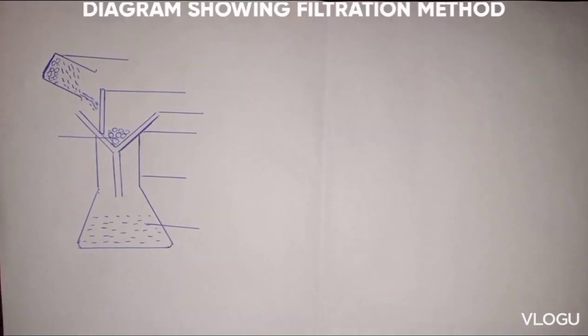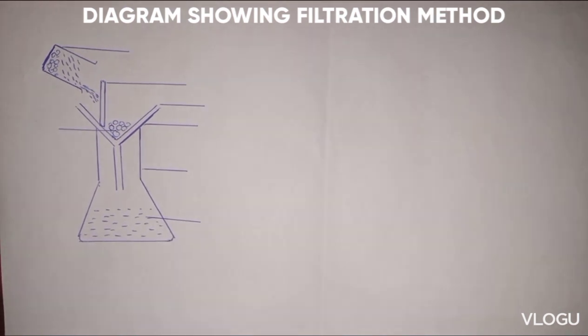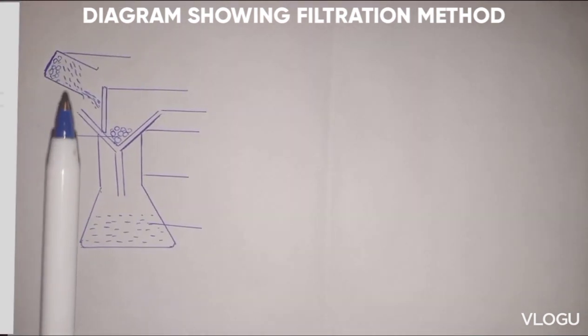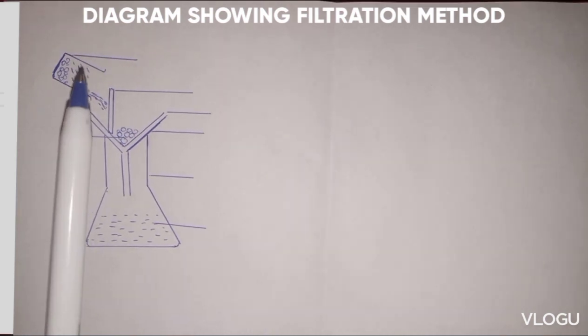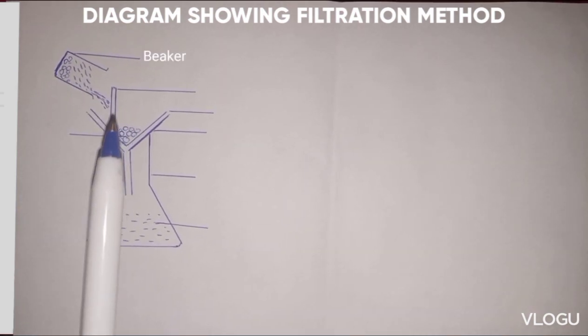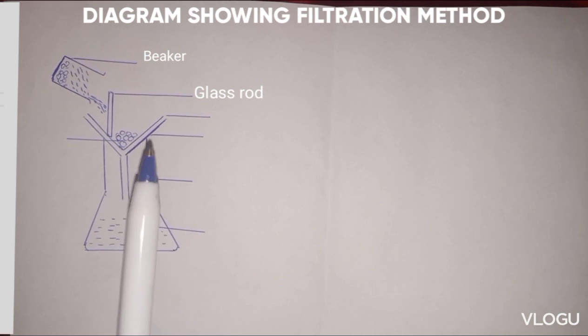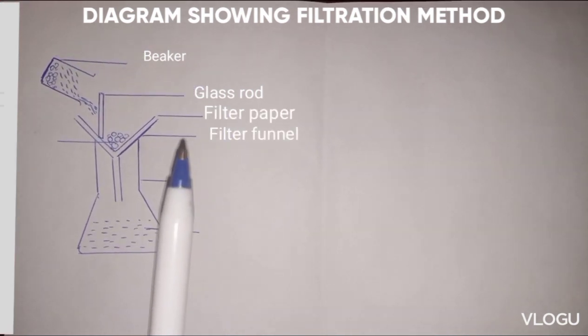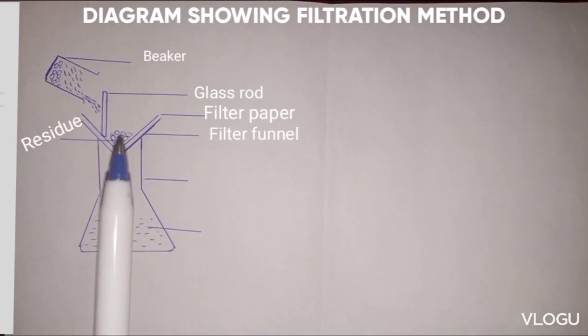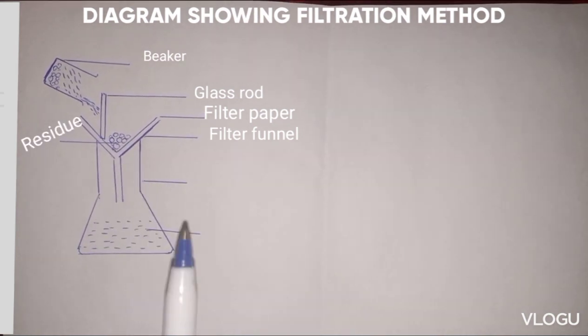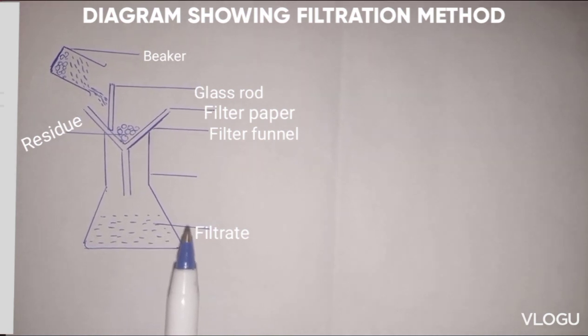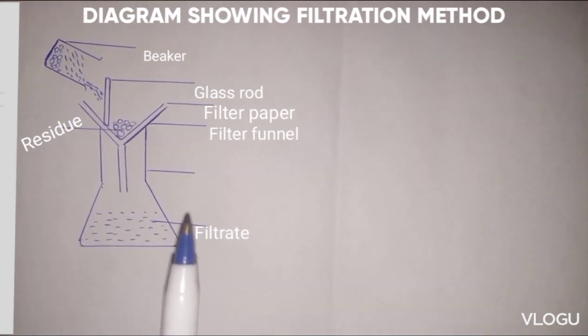The diagram below shows filtration methods used to separate a mixture of sand and water. The mixture was placed here in a beaker where it is poured through the glass rod here. This is the filter funnel with a filter paper. The residue remains here, that is sand. Then the liquid, the water, passed through. So you have the filtrate collected in a conical flask.